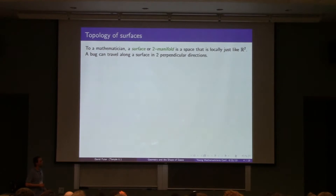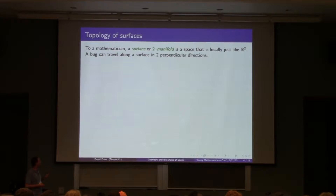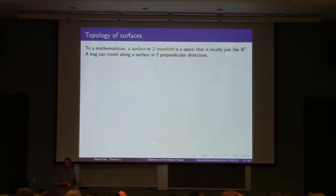Let's talk about surfaces. Surfaces are spaces that are locally just like R2 — a little neighborhood of a point on your surface is homeomorphic to a neighborhood of a point in the plane. A good way to think about it is intrinsically: if you're a bug exploring a surface, what makes it a surface is that there are two perpendicular directions where you can move — two degrees of freedom. A surface is a two-manifold, and you can generalize that to an n-manifold with n degrees of freedom.